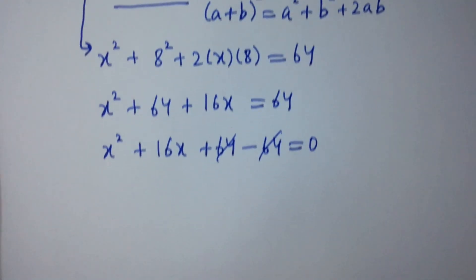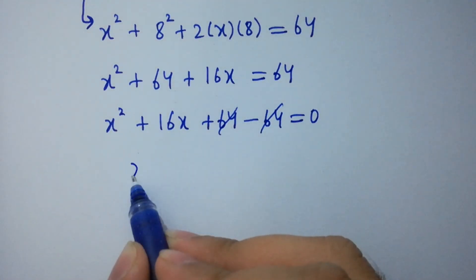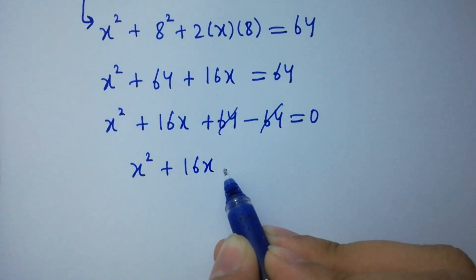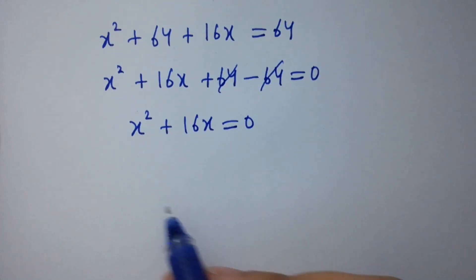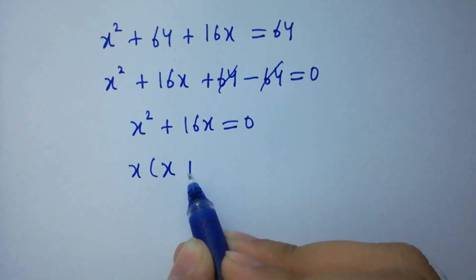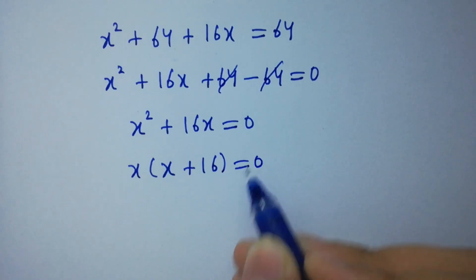64 and 64 cancel. We have x² + 16x = 0. Here x can be common: x(x + 16) = 0.